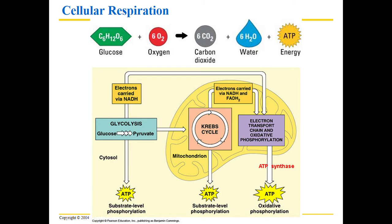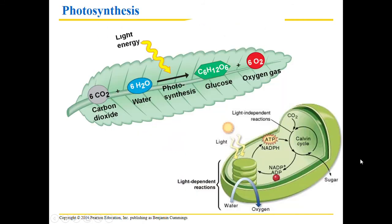The last step is the electron transport chain. Here, hydrogens move through an ATP synthase pump, and each one that goes through is able to make one ATP. This is where we make most of our ATP. By the end of this whole process we get about 30 to 36 ATP, and the hydrogens combine with oxygen to form water.